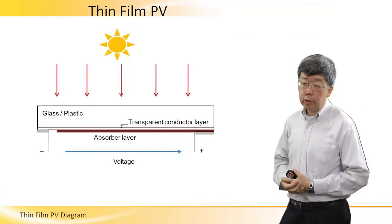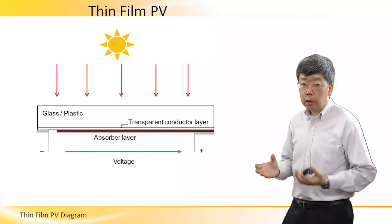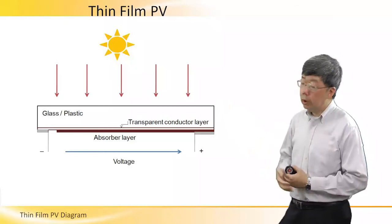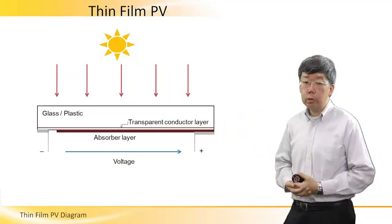When light shines onto the thin film PV device, this device will behave like a battery. You will get a voltage across the two terminals and current can flow if you connect a load, such as a resistor, between the two terminals. This is a very interesting point. Thank you.